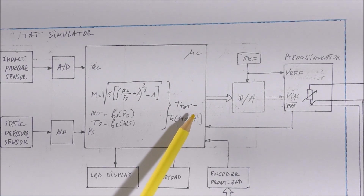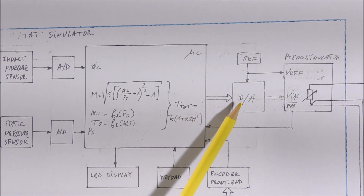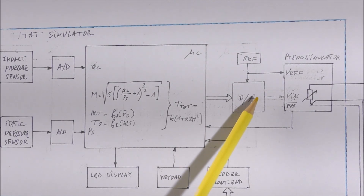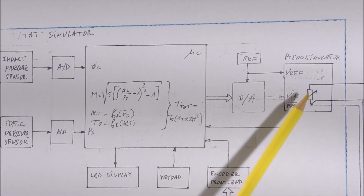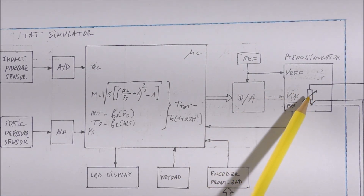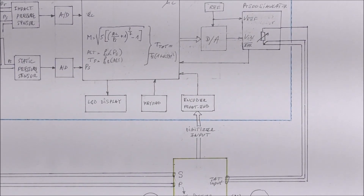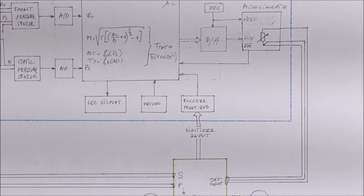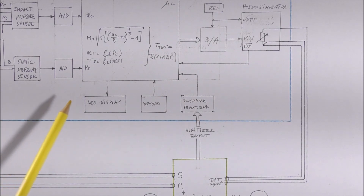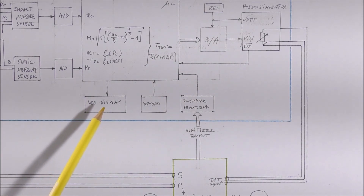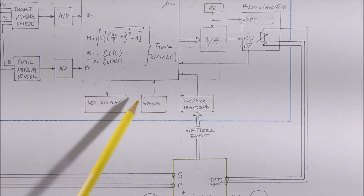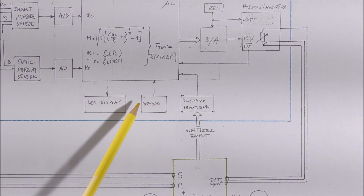The total air temperature will be converted into a voltage using a digital-to-analog converter. The output voltage will be fed to a module which will simulate the total air temperature probe, which is connected to the air data computer using a three-wire connection. There will also be an LCD display which will permit to display the Mach number, the total and the static air temperature, and other parameters. There will be a small keypad with some push buttons.